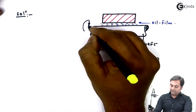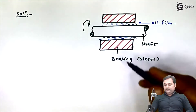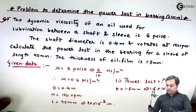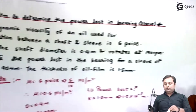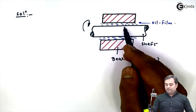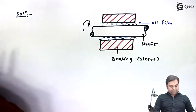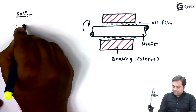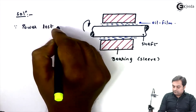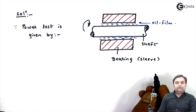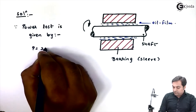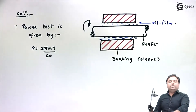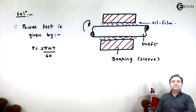This shaft rotates inside the bearing and the oil film moves along with the shaft. The question is to calculate power lost — how much power is lost because of the shearing of the oil film. In order to calculate power lost, the formula is P = 2πNT / 60. I'll keep this as equation number one.